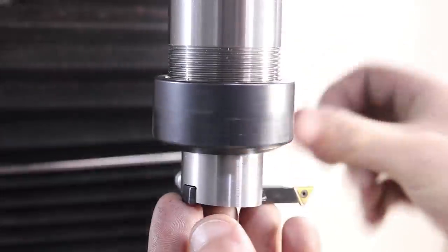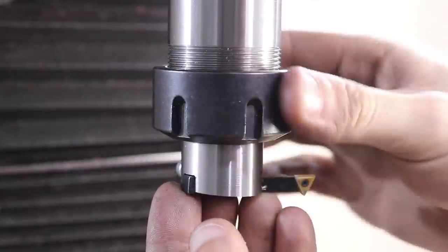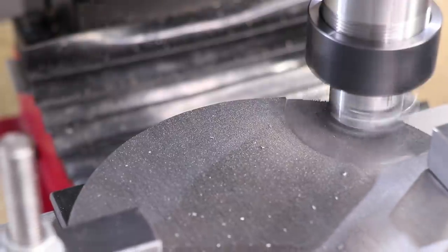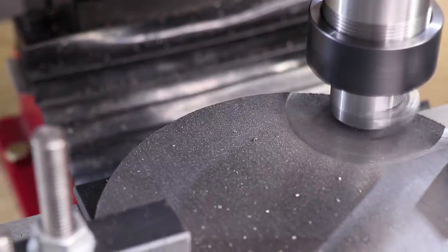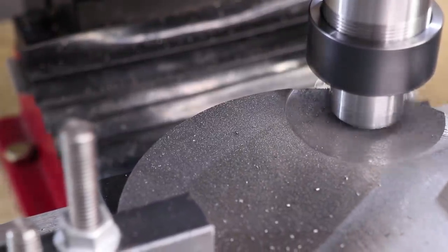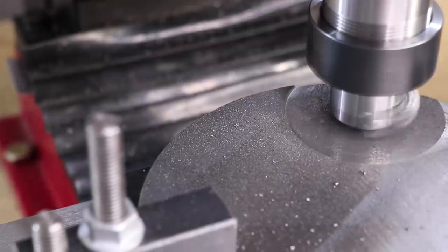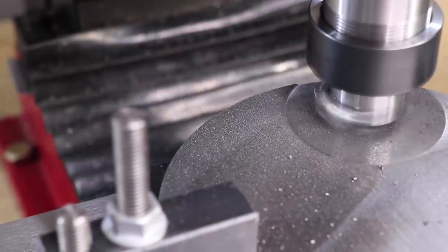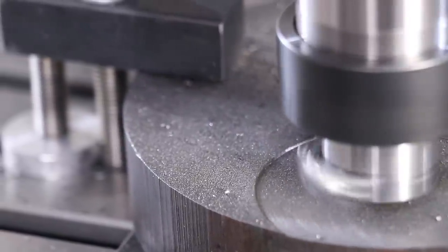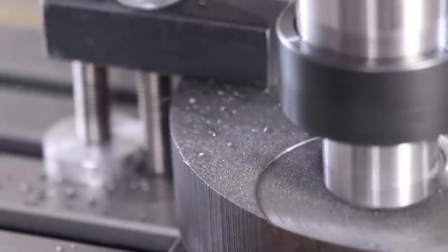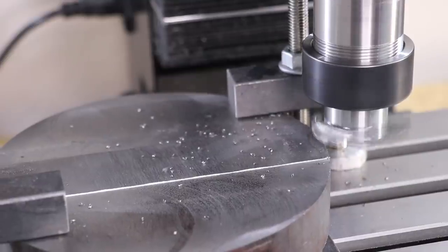I used my fly cutter to face down the cast iron. And to be honest, I wasn't blown away by the surface finish. I get a really decent result in mild steel, but this insert just isn't made for cast iron. I rarely machine cast iron outside of drilling it, but next time I'll be sure to order some inserts made specifically for machining it.